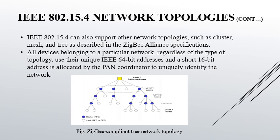As shown in the figure, in a ZigBee compliant tree network topology, the PAN coordinator always resides at level 0. Further down come the routers, and the RFDs or FFDs — i.e. reduced function devices or full function devices — are always the leaf nodes. All devices belonging to a particular network, regardless of the type of topology, use their unique IEEE 64-bit addresses, and a short 16-bit address is allocated by the PAN coordinator to uniquely identify the network.